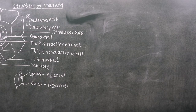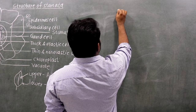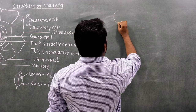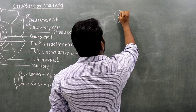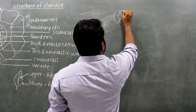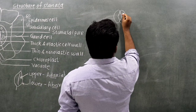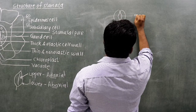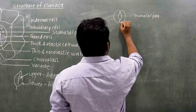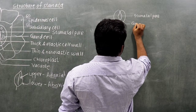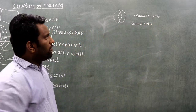Next point: stomata are guided by guard cells. What is the guard cell? The guard cell has a kidney shape in dicots and a dumbbell shape in monocots. The stomatal opening is surrounded by these guard cells.